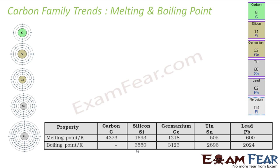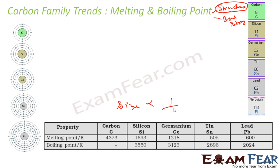Let's talk about the melting and boiling point. The melting and boiling point depends on structure and bond strength. Structure needs real investigation using techniques like diffraction to find. But bond strength is something you can guess just by size — more the size, less the bond strength. Two big atoms means less bond strength; two small atoms means more bond strength.